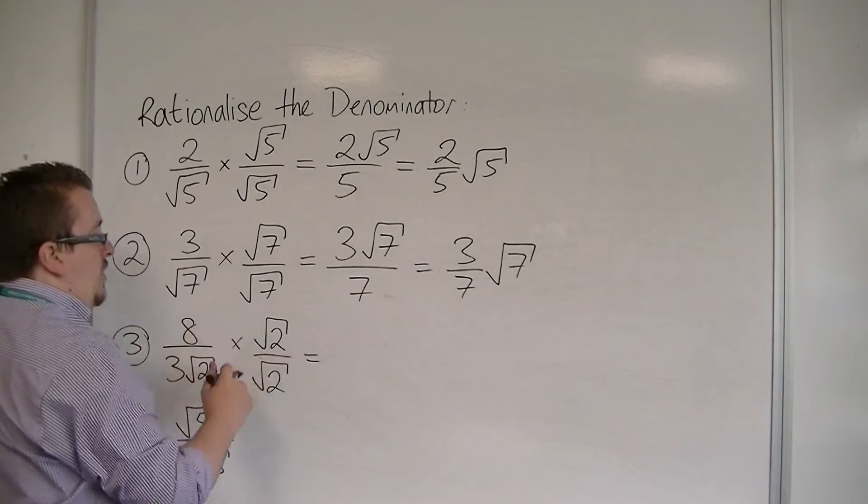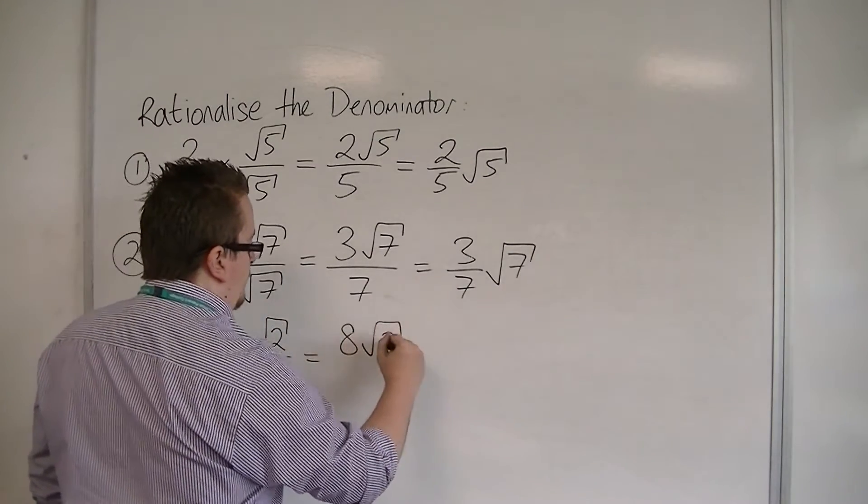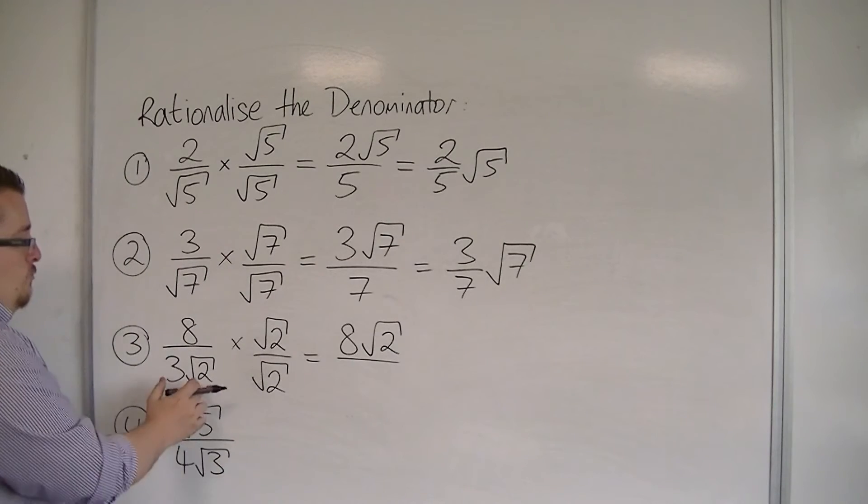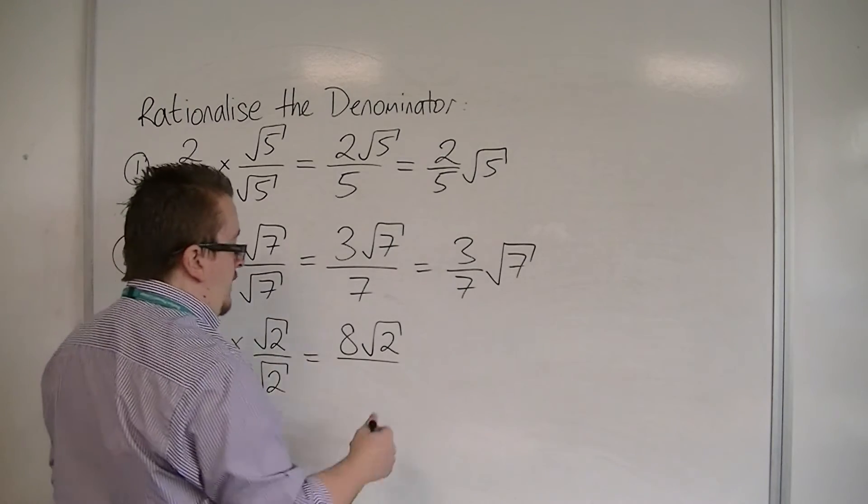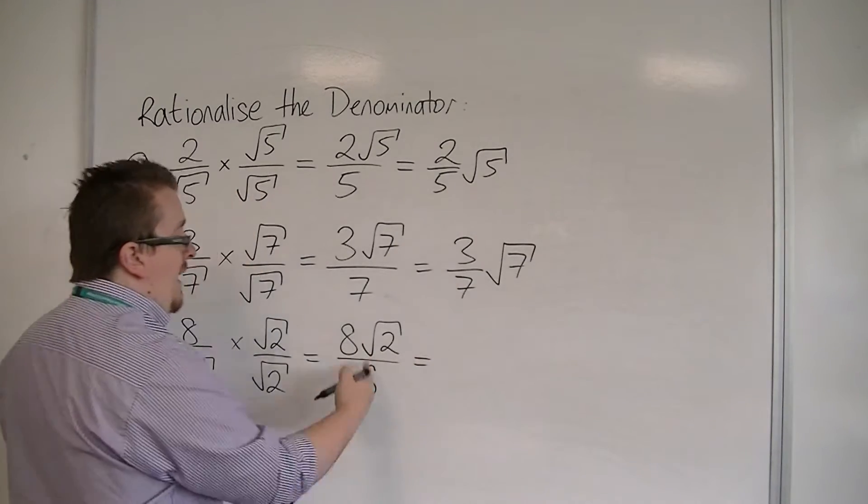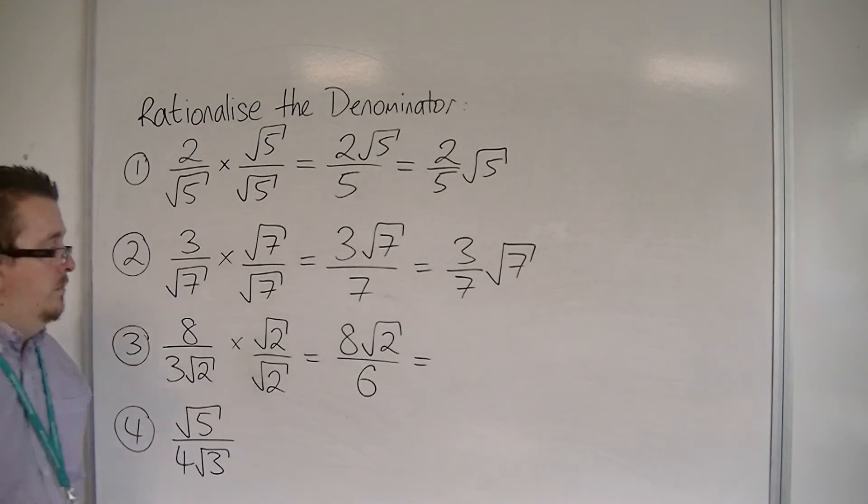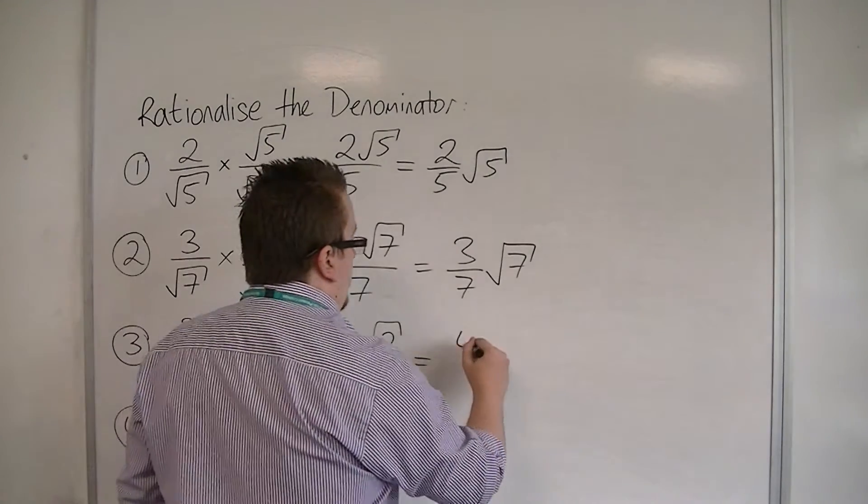I have 8 times root 2, so 8 root 2, over root 2 times root 2 is just 2. So 3 times 2 is 6. I have 8 sixths root 2, which I can simplify to 4 thirds root 2.